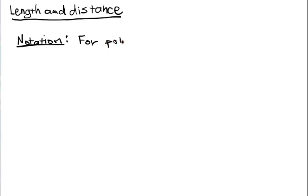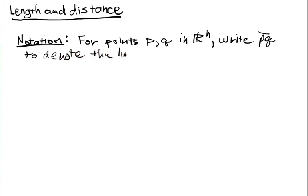For points P and Q in n-dimensional Euclidean space, we're going to write PQ to denote the line segment joining P and Q.